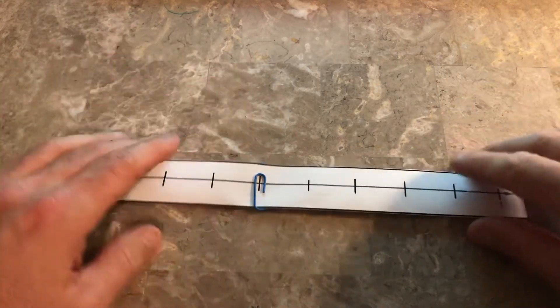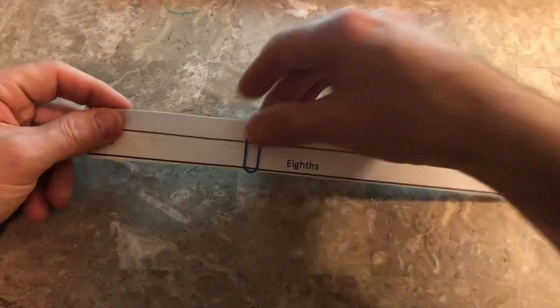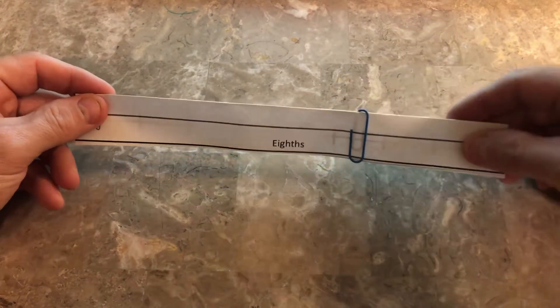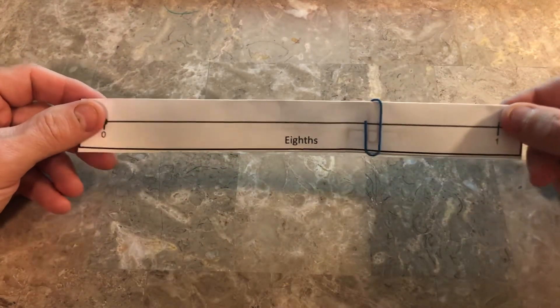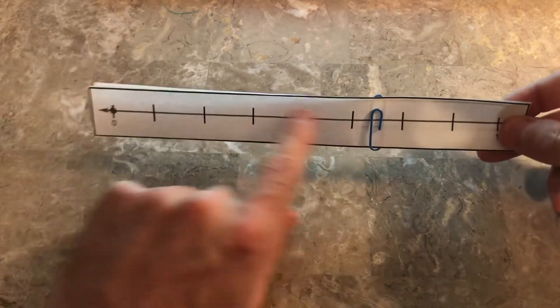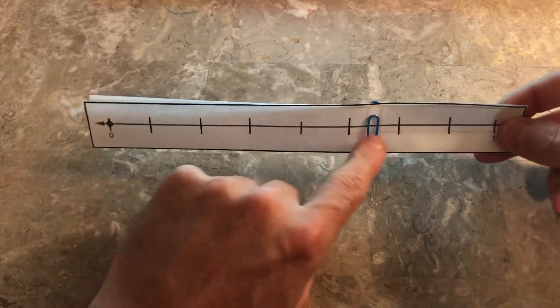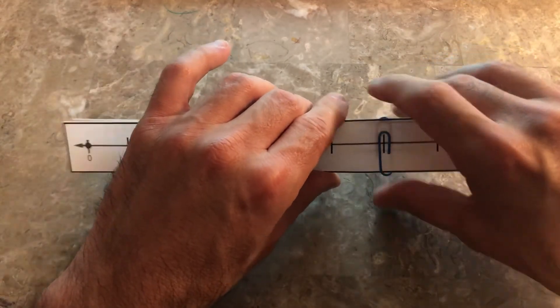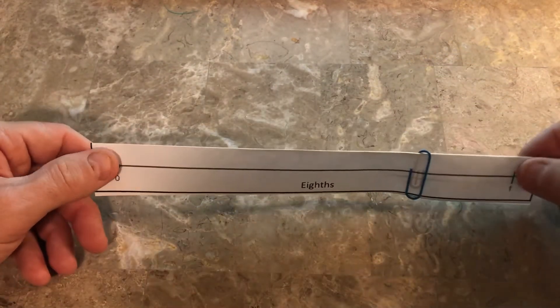Say, 'About where would I be at there?' This looks maybe about six-eighths. Let's check: one, two, three, four, five - it's between five and six, so six-eighths was a pretty good guess.